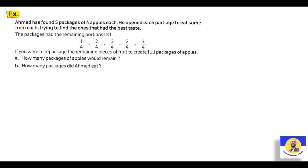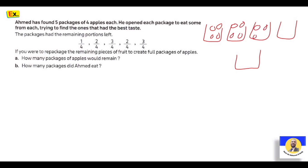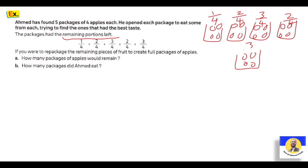The next question: Ahmad has found five packages of four apples each. He opened each package to eat some from each, trying to find the ones that had the best taste. Each package had remaining portions left: from the first it's one quarter, from the second two quarters, from the third three quarters, from the fourth two quarters, and from the fifth three quarters.